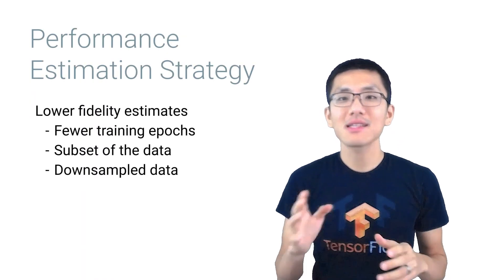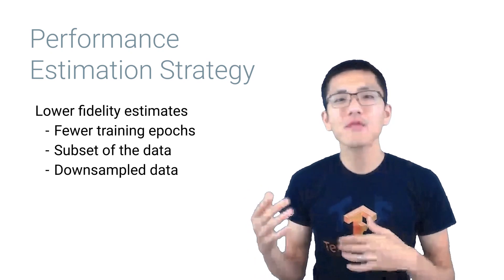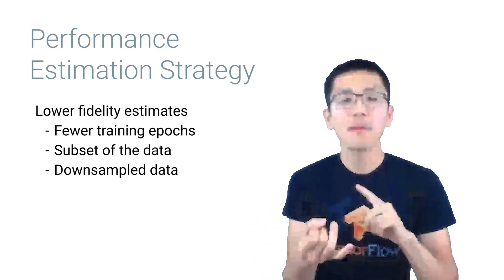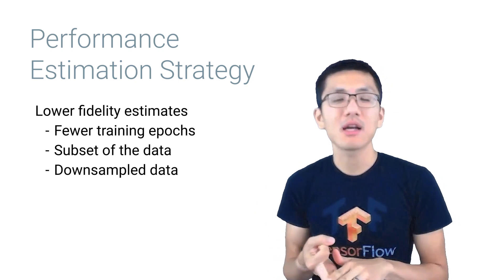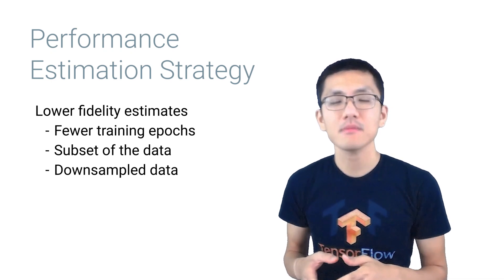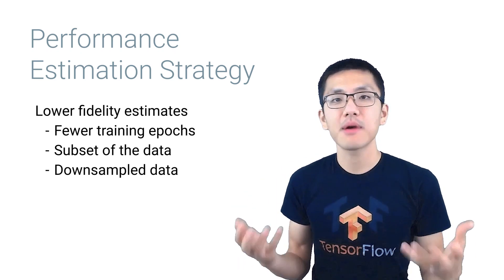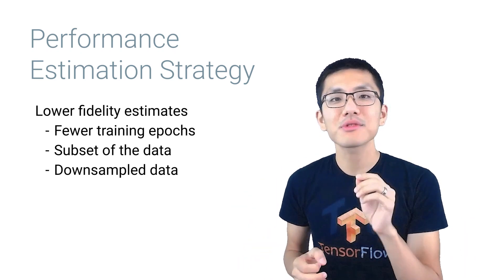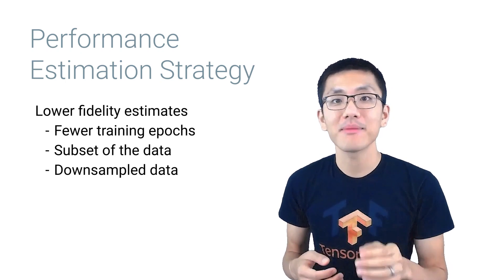First up, we have the technique of using lower fidelity estimates, which can be anything from training for fewer epochs, or perhaps just on a subset of the data. Or for things like visual data, you can train on downsampled data. The training results will, of course, be lower than that of a fully trained model. But the idea is that you will still be able to get a relatively stable ranking of those candidate models.